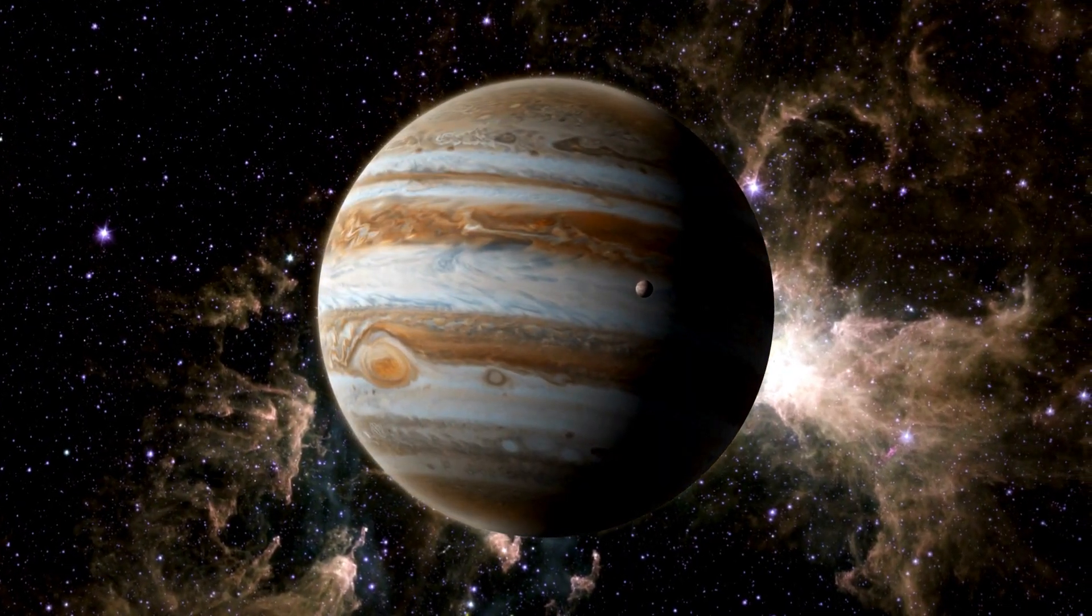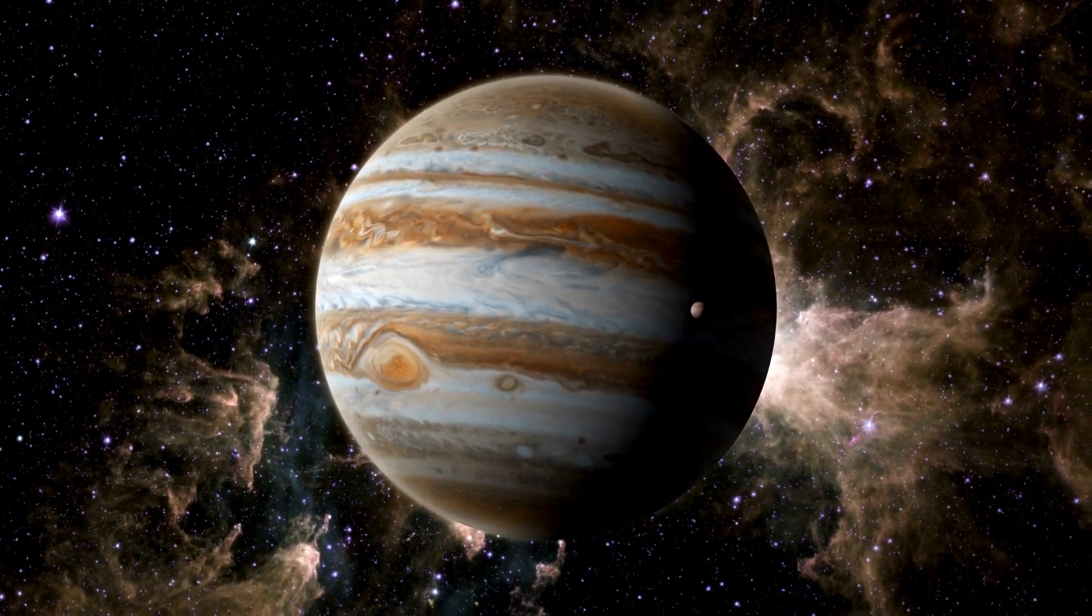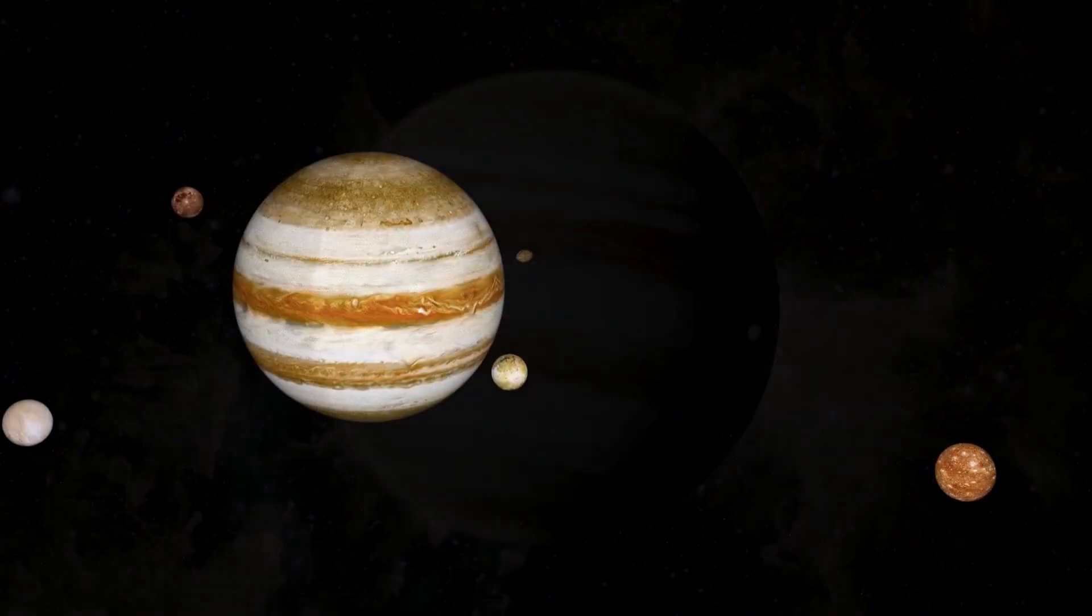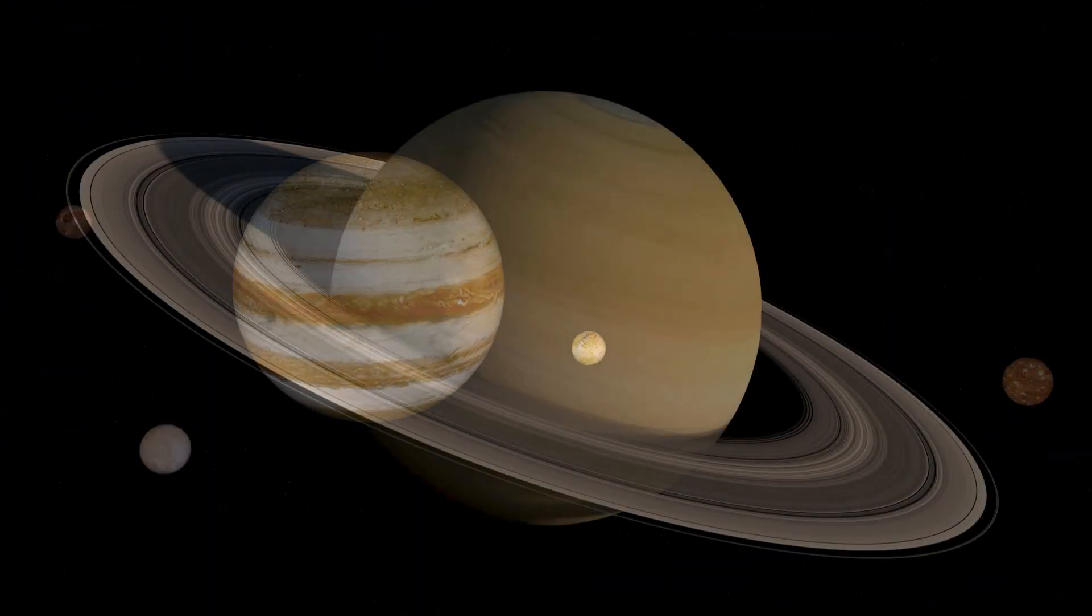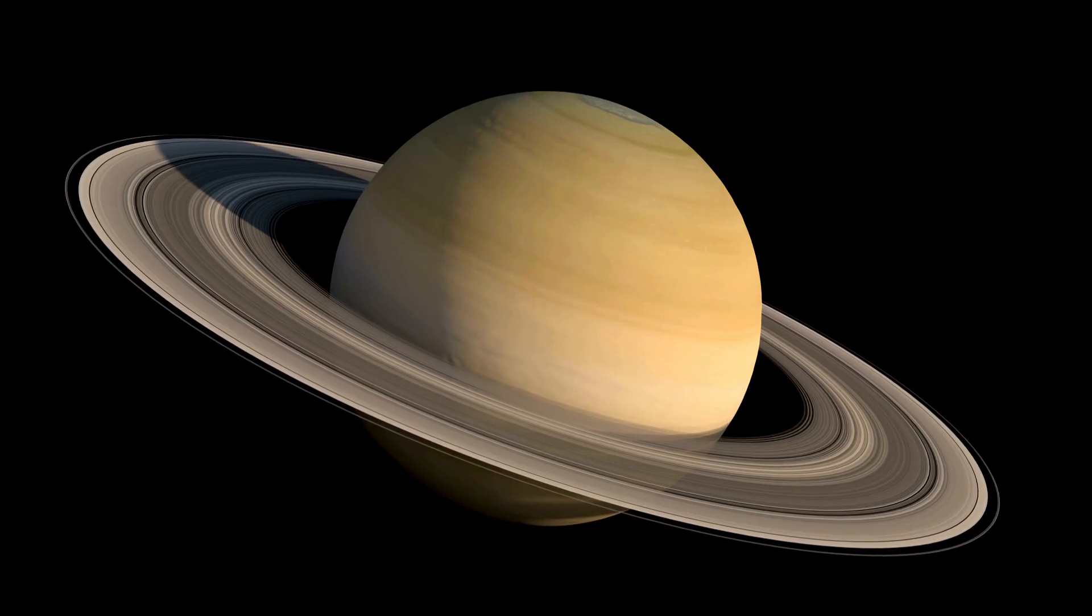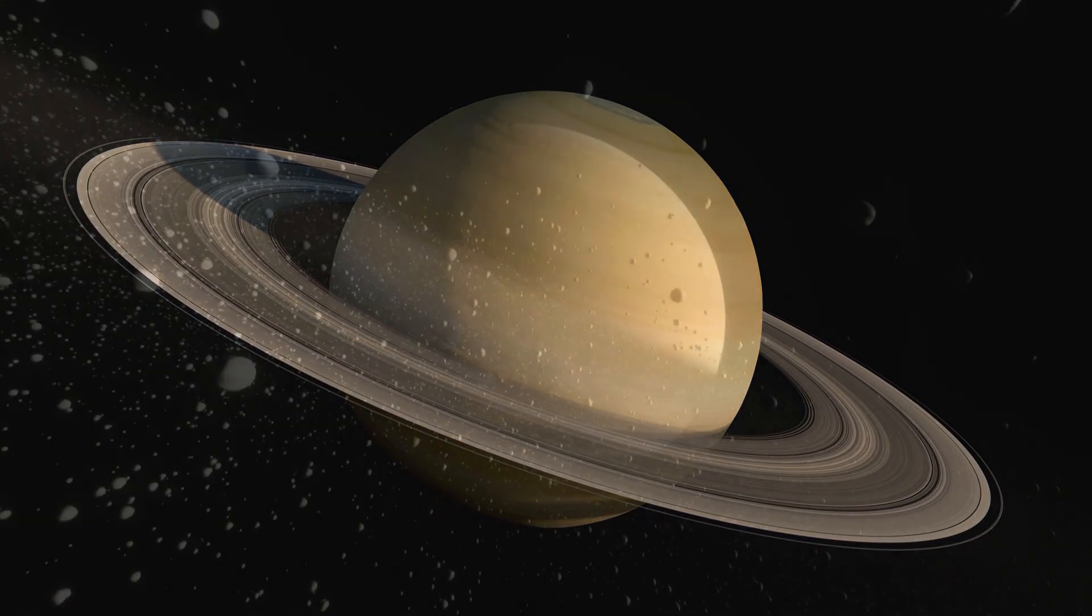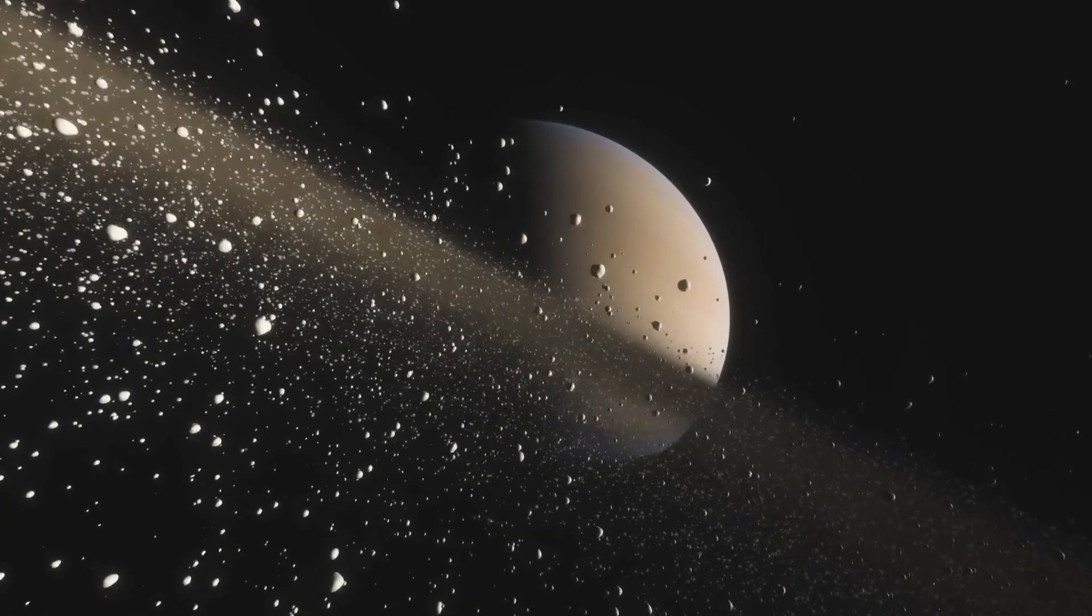Jupiter's giant with a stormy spot, bigger than all, with moons a lot. Then there's Saturn with rings so wide, made of ice, they glow with pride.